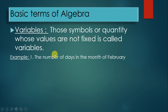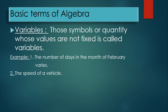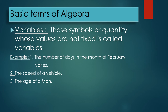February can have 28 or 29 days — it depends on the year. Another example: the speed of a vehicle is not constant; it changes. Similarly, the age of a person is not constant — it keeps increasing. These are all real-world examples of variables.